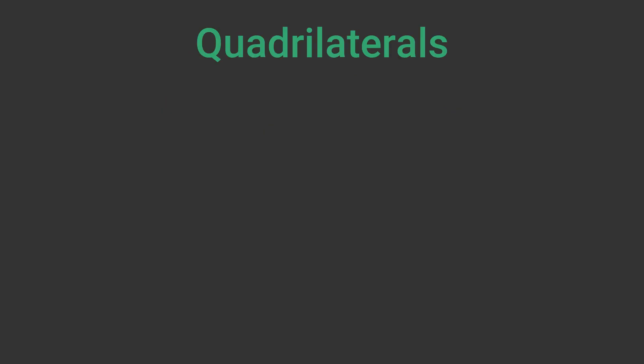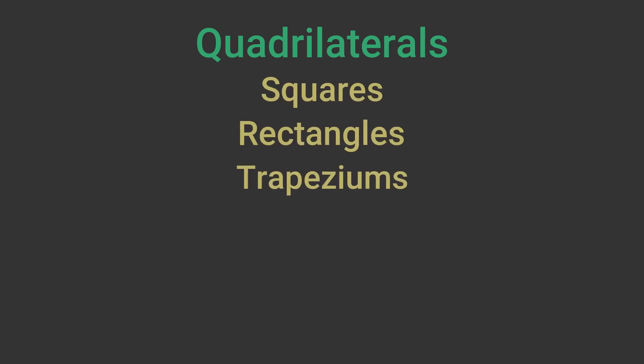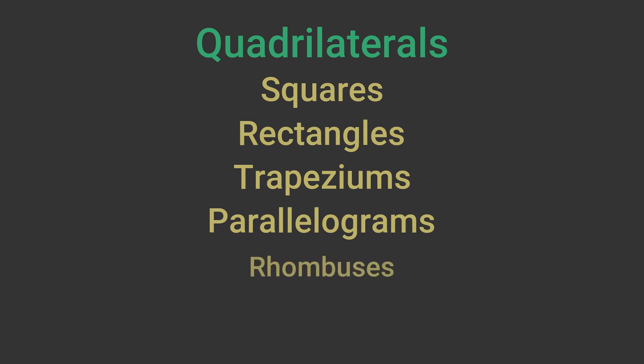In this video we will look at quadrilaterals. A quadrilateral is any four-sided polygon, in other words any flat shape with four straight sides. Some quadrilaterals have special names. The most well known are squares, rectangles, trapeziums, parallelograms, rhombuses and kites. We will look at the properties of each of these types.